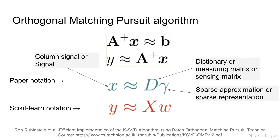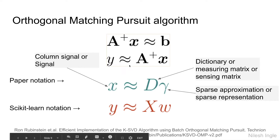The reason we discuss this is that in the Orthogonal Matching Pursuit algorithm we are dealing with either an overdetermined or underdetermined system. The notation used is x ≈ D·γ, and in scikit-learn notation y ≈ X·w. Mapping to the previous slides: D corresponds to A, γ or w corresponds to x, and x or y corresponds to b.